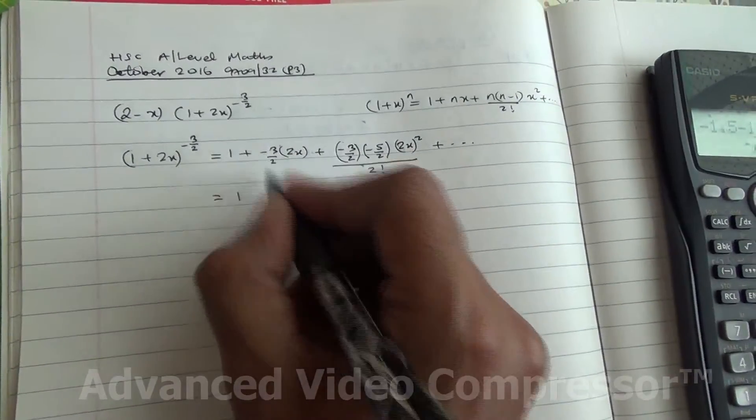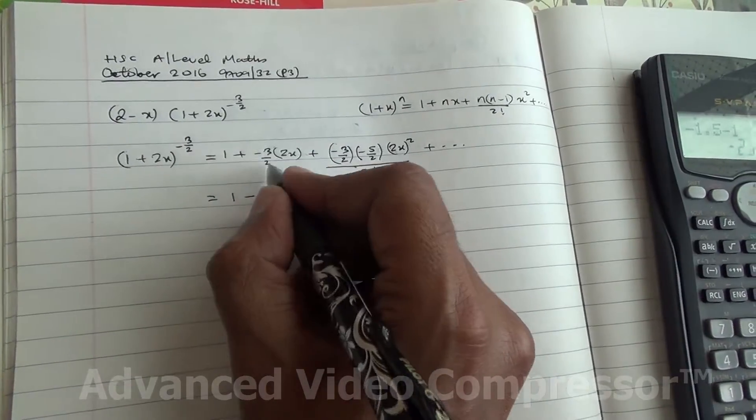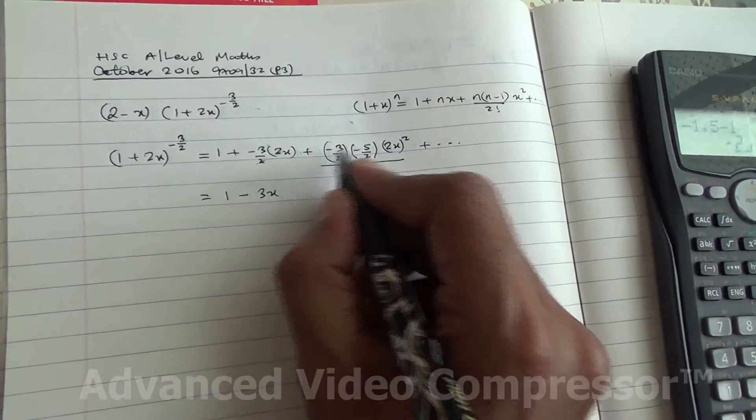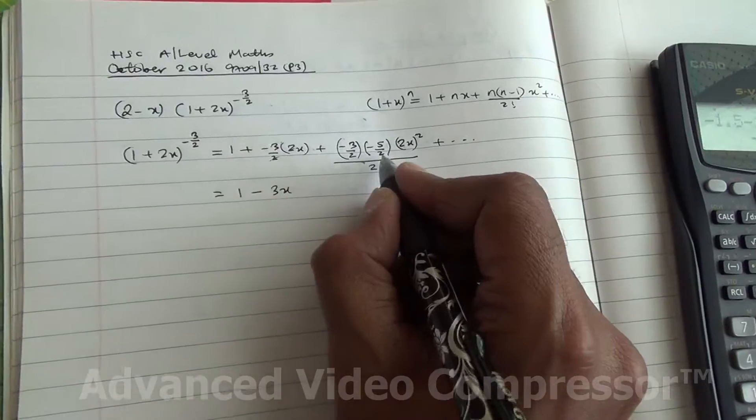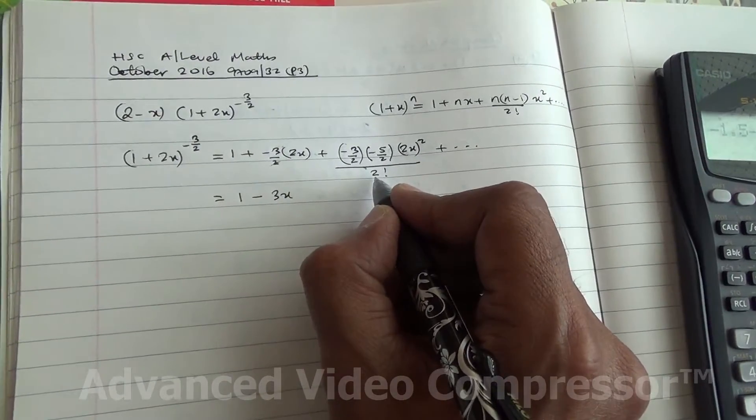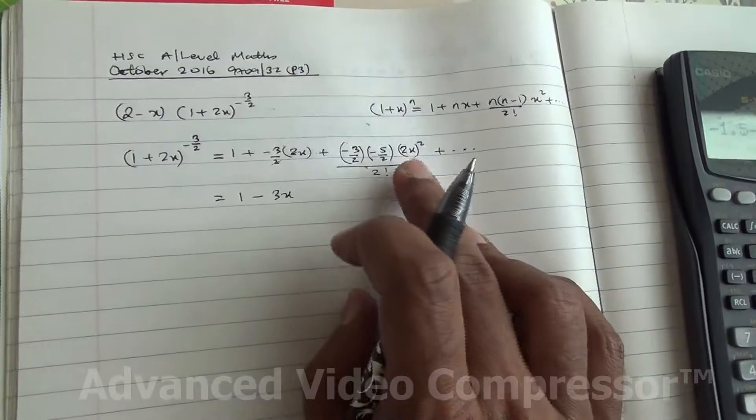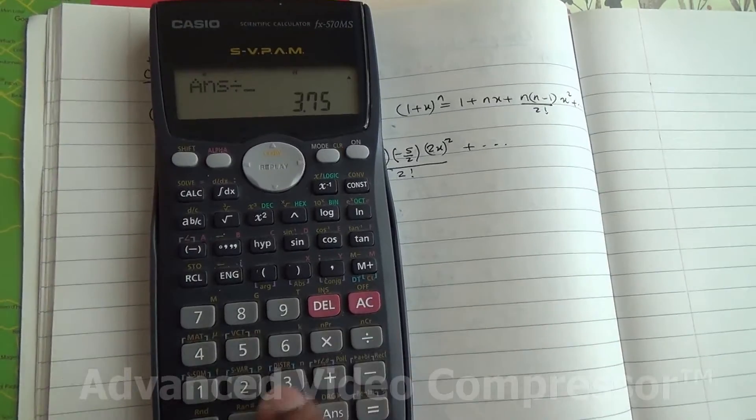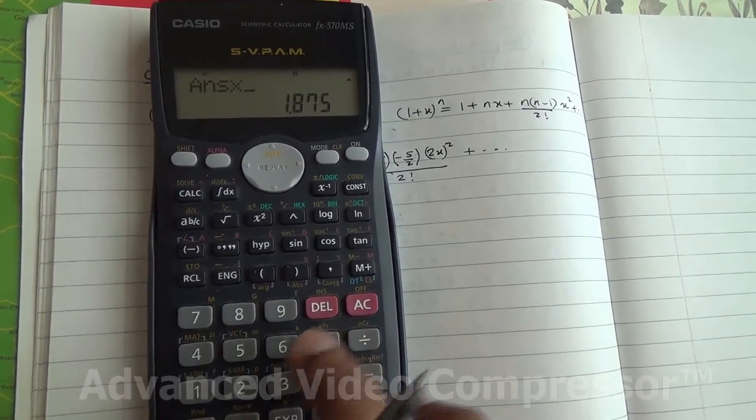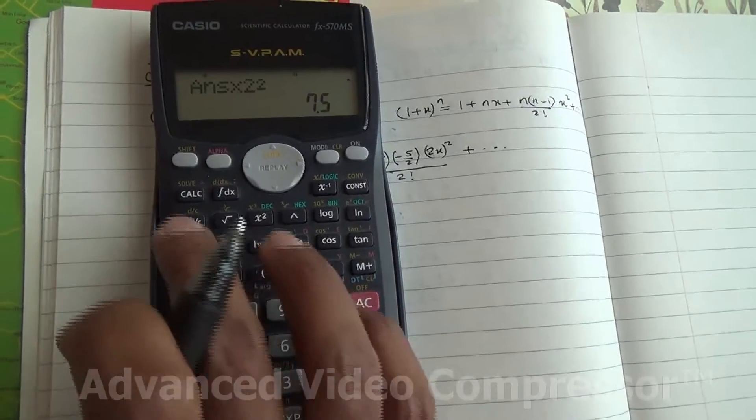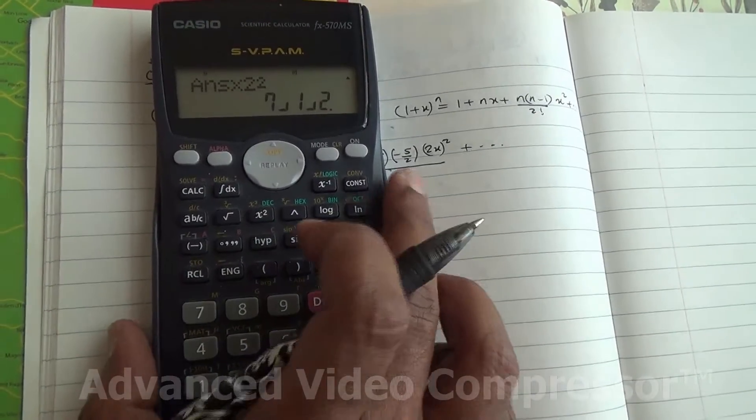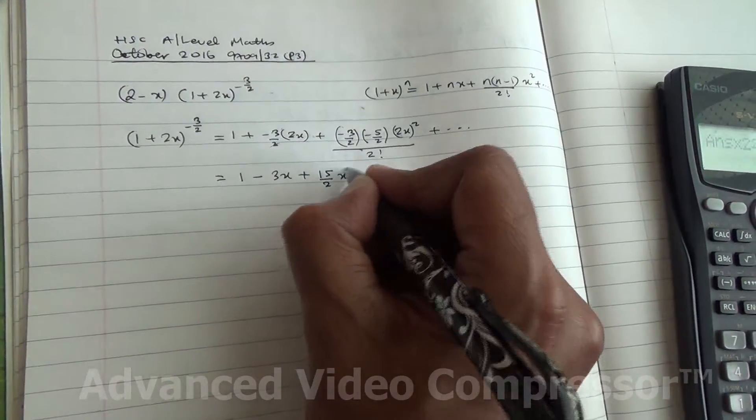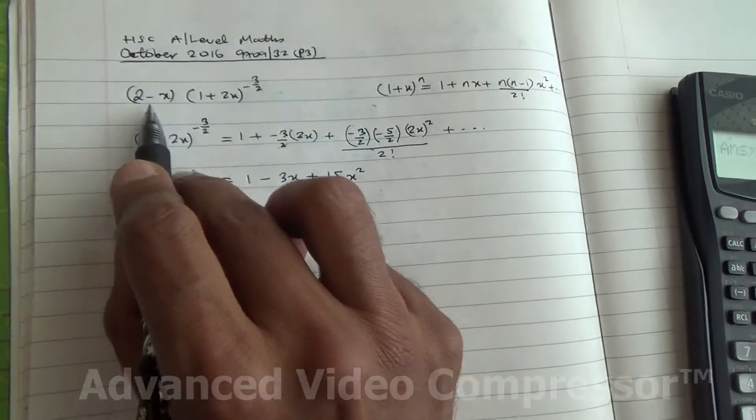So I'm going to say 1, minus plus becomes minus, this is going to be crossed out, I've got 3x. And what about this? Minus times minus is plus, so 15/4 divided by factorial of 2 is 2, so 15/4 divided by 2 times 2 squared. It's going to give us 7.5, which is 15/2, so that's going to become then plus (15/2)x². We need to expand it with this.